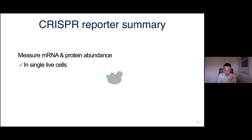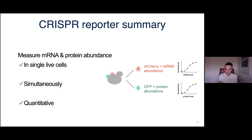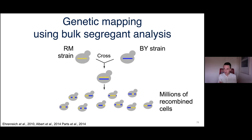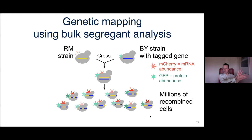Christian crossed our two strains, inserted his reporter system, and kept segregants as a pool — up to millions of genetically diverse cells in a single tube. To map genetic effects, he runs the pool through a fluorescence-activated cell sorter, collecting the top 1–2% and bottom 1–2% of cells by mRNA abundance (mCherry), then does bulk whole-genome sequencing of both populations and compares them genetically.